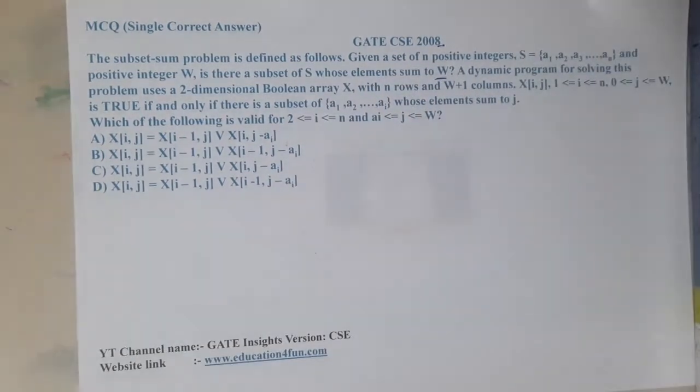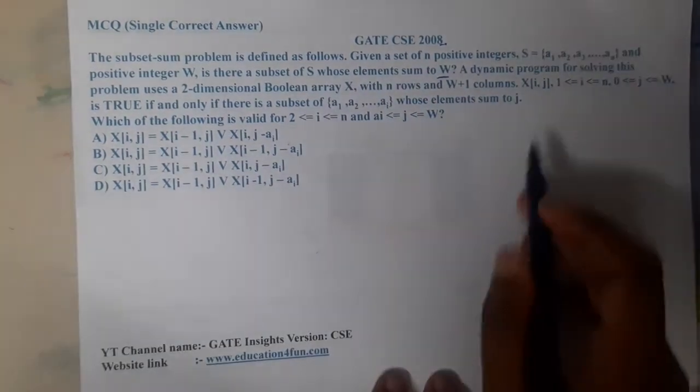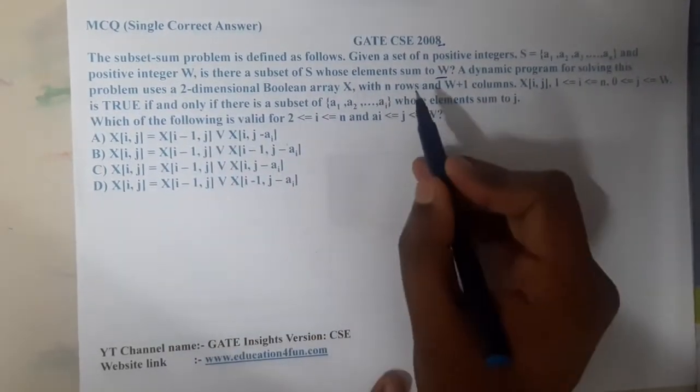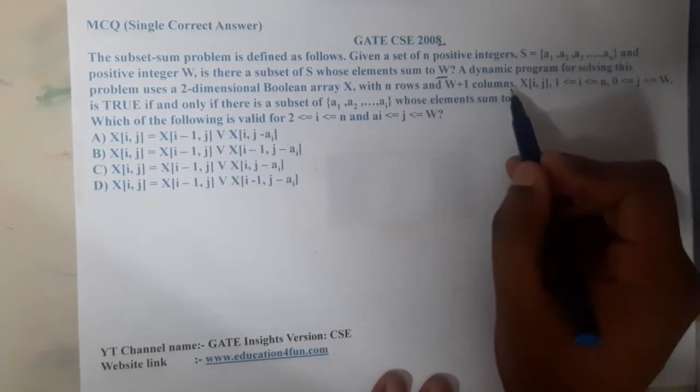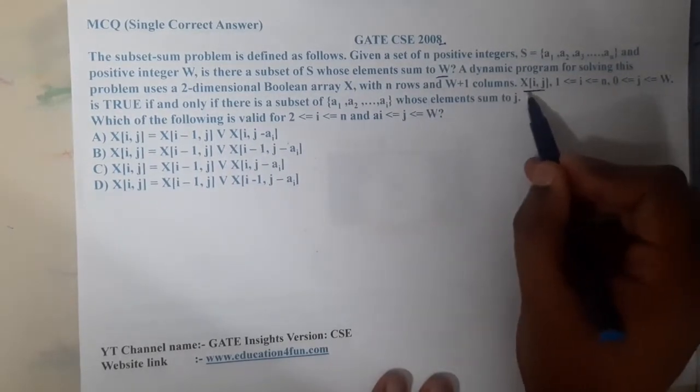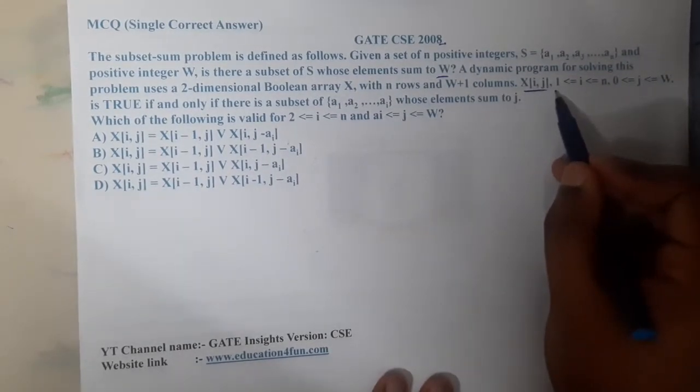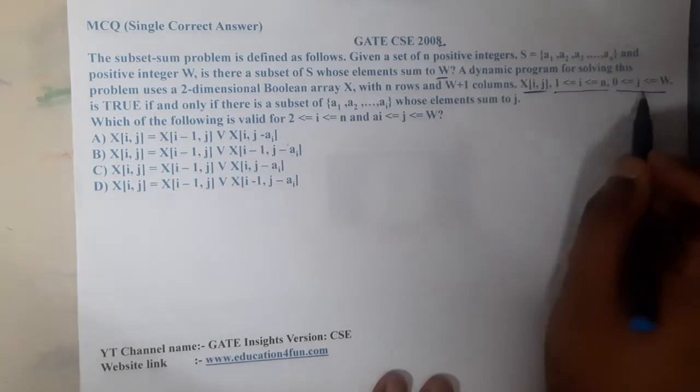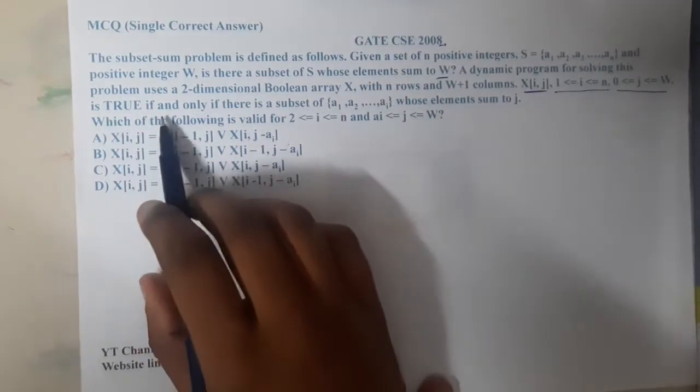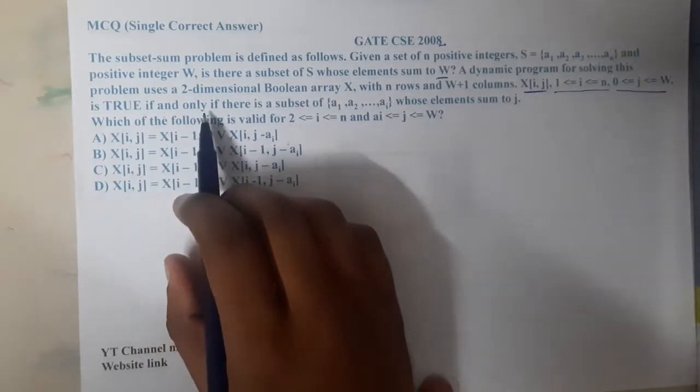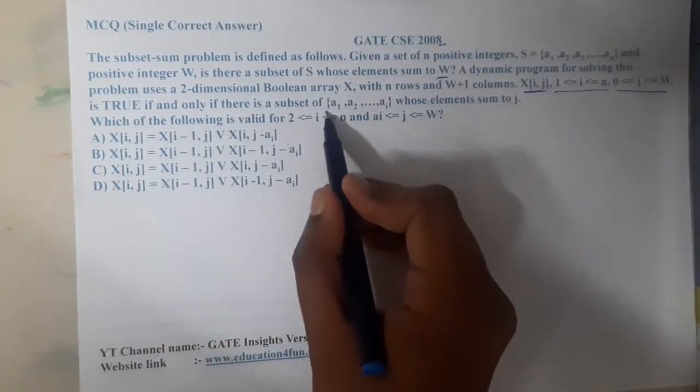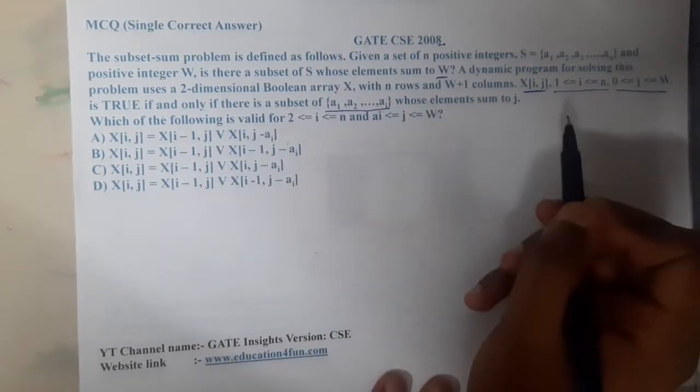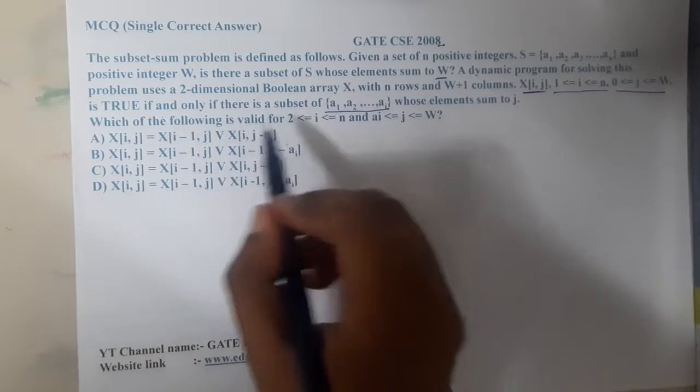By using a dynamic approach for solving this problem using two-dimensional boolean array X with n rows and w plus 1 columns, X(i,j) where 1 ≤ i ≤ n and 0 ≤ j ≤ w is true if and only if there is a subset a1, a2, up to ai whose elements sum is j. Which of the following is valid?